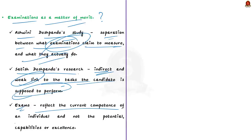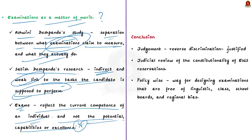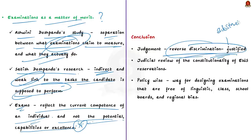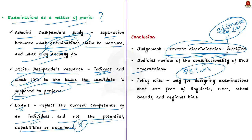Finally, the judgment questions examinations as a measure of merit. It cites the Ashwini Deshpande study highlighting a sharp separation between what examinations claim to measure and what they actually do, and also cites Satish Deshpande's research showing that what examinations measure has an indirect and weak link to the task a candidate is supposed to perform. Based on this, the judgment opines that exams can only reflect the current competence of an individual but will not reflect the scope of their potential capabilities. The Supreme Court said reverse discrimination claims can be justified under substantive equality, and this invites stringent judicial review of EWS reservation constitutionality.